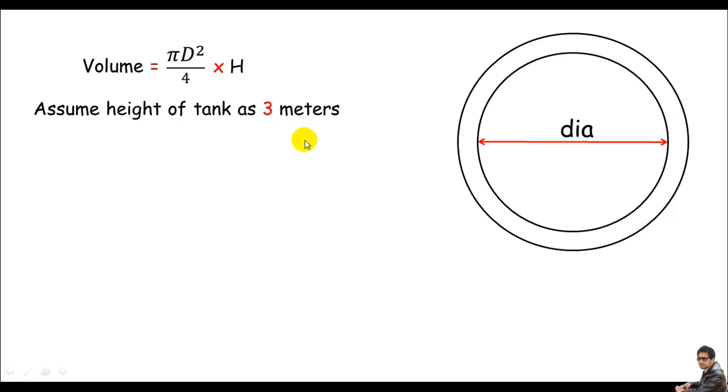This is a nice assumption. No problem. If you design your tank and the diameter is not good value, you can of course change your assumption and review your design. This will depend upon your site. For this time, let's try 3 meter as the height of the tank and let me put this value in this formula.